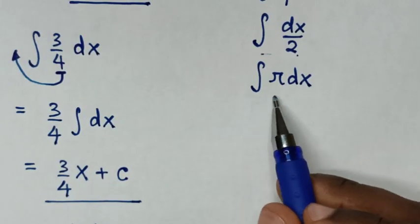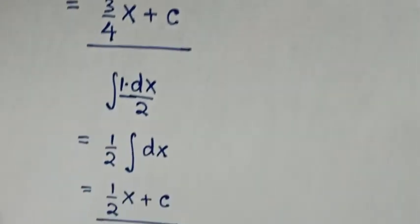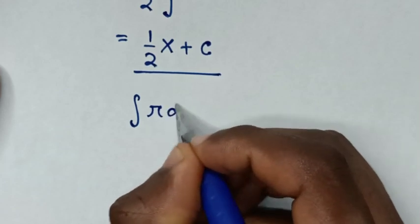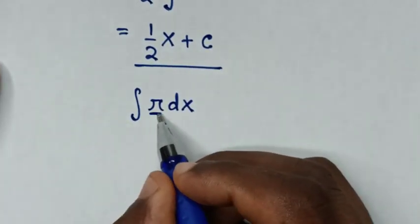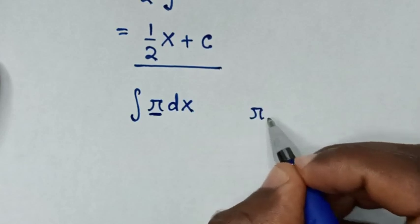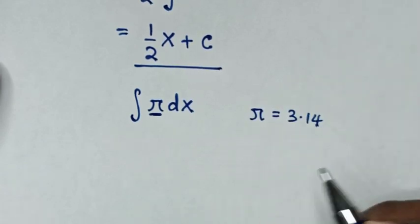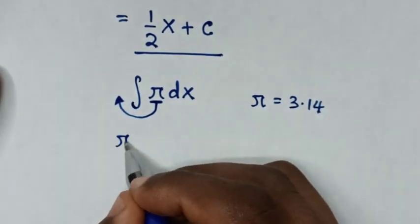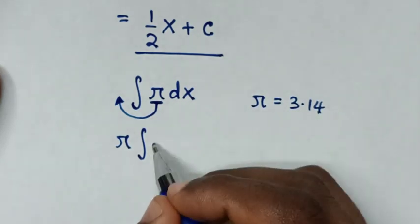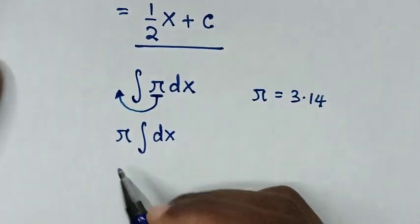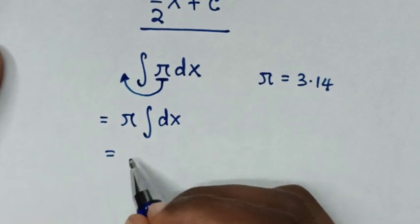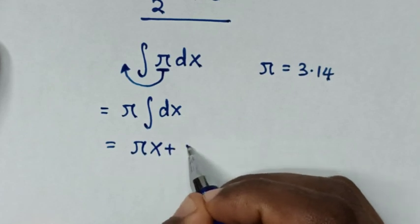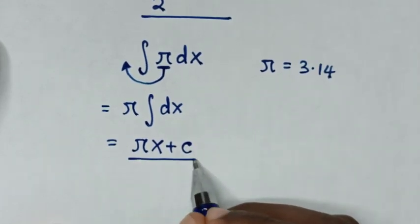Now solving the integral of pi dx. Pi is a constant, where pi is equal to 3.14. So pi will move outside of the integral. It will be pi times the integral of dx. The integral of dx is x plus C, so the final answer is pi times x plus C.